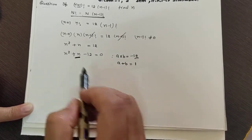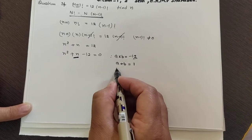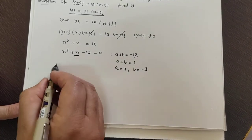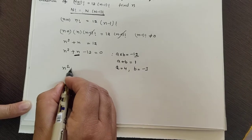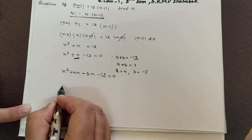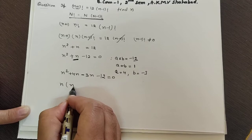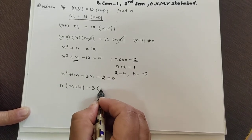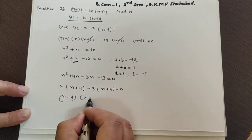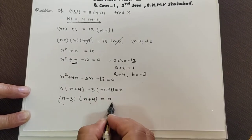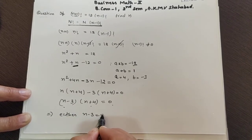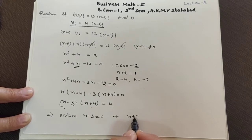Since the sign of the middle term is plus, the biggest term will be positive. So take a = 4 and b = -3. We write n²+4n-3n-12 = 0. Factoring: n(n+4) - 3(n+4) = 0, giving (n-3)(n+4) = 0.